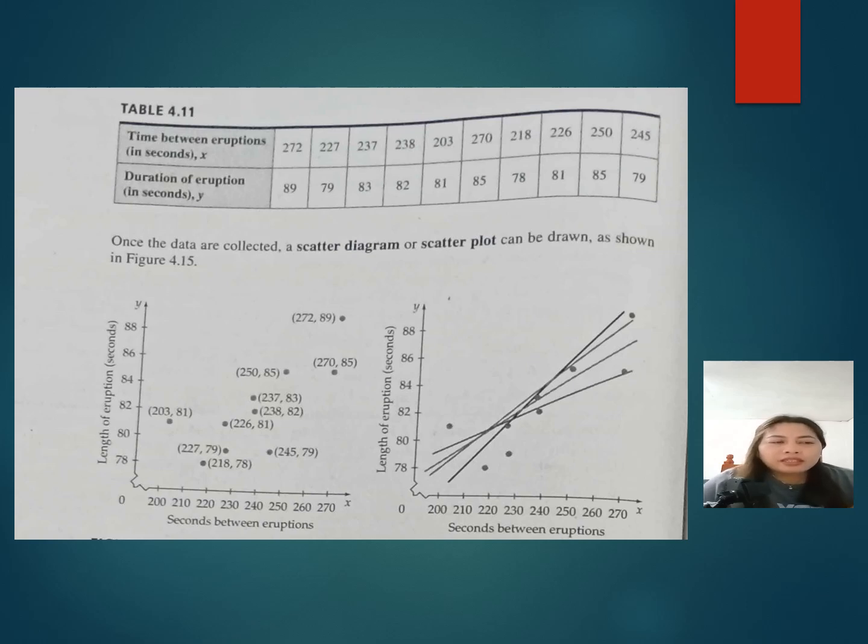Once the data are collected, a scatter diagram is made. If the data points make a straight line going from near the origin out to high y values, the variables are said to have positive correlation. If the data points start at high y values on the y axis and progress down to low values, the variables have a negative correlation.